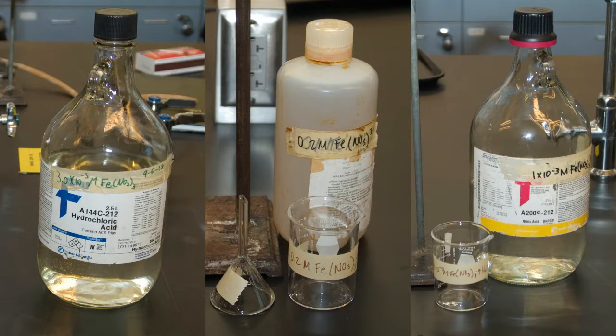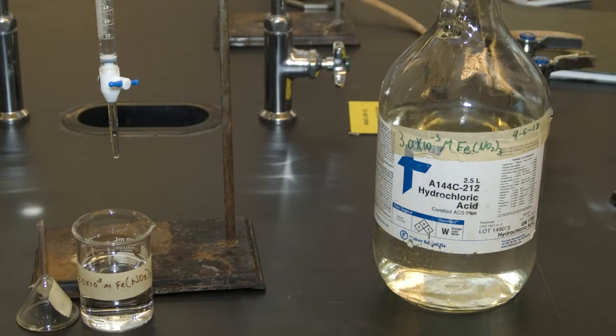Helpful hint. There are three different concentrations of iron-3-plus used in this experiment. Make sure you do not select the wrong concentration, as it will cause extremely erroneous results. 3.0 times 10 to the minus 3 molar is used in Part A.